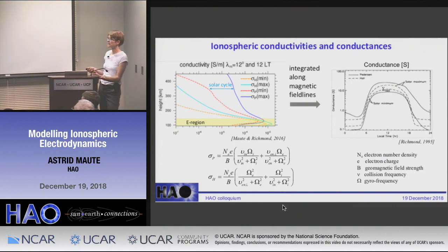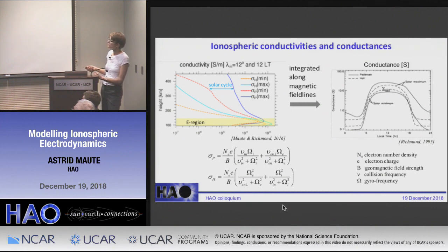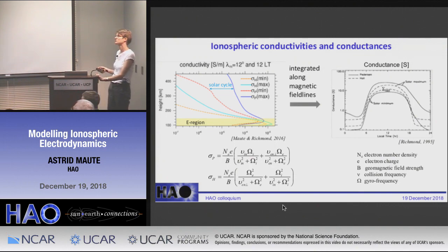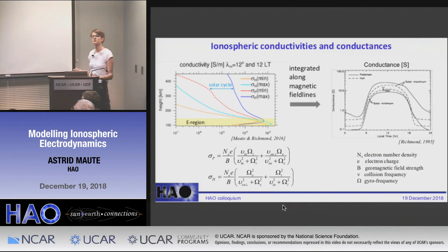What is important for the electrodynamics is the field-line-integrated conductivities — the conductances. One thing to point out: conductance is reduced during nighttime since solar radiation is missing, and enhanced during daytime. The Pedersen conductance is larger than the Hall term, even though the Hall conductivity has a larger peak than the Pedersen. This is due to the geometry of the field line, which has a longer integration path in the region of large Pedersen conductivity than Hall.